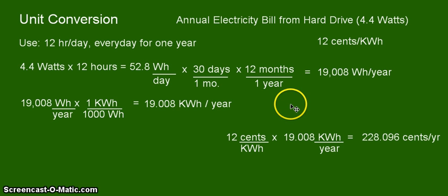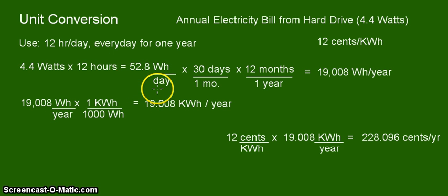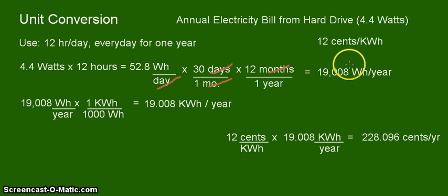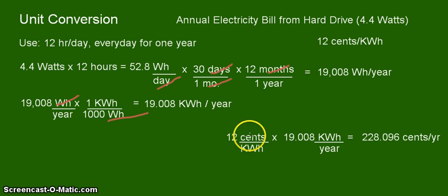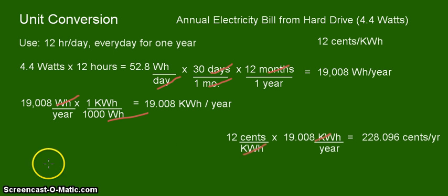In the conversion of your units, you have to make sure that the units are properly placed so that you will be able to see the cancellation of your units, such as the days and the months. You see that unit watt-hour and year is left, so that's your unit for your answer. In this part, you have watt-hour canceling watt-hour, so kilowatt-hour per year is your unit. Then lastly, kilowatt-hour and kilowatt-hour cancel out, and you now have your unit cents per year. So that is your annual electricity bill from your hard drive with 4.4 watts as your power. Thank you for listening, and continue learning.